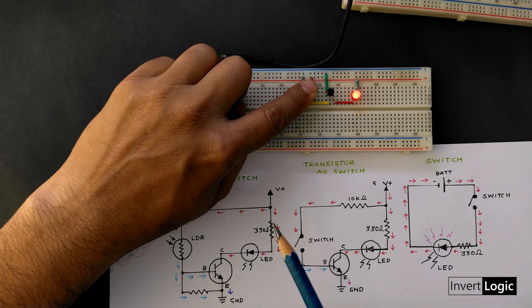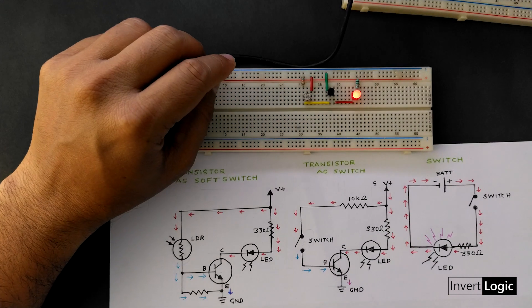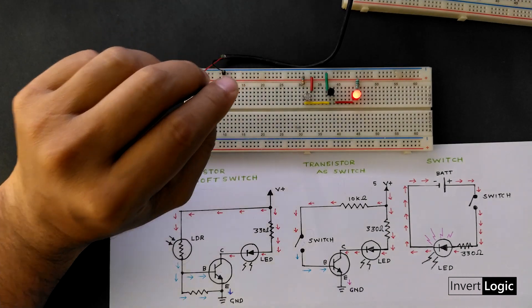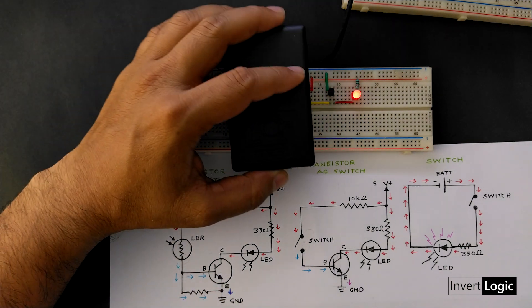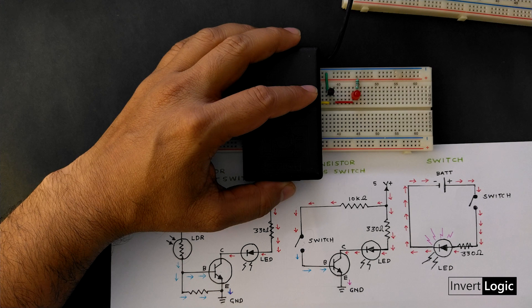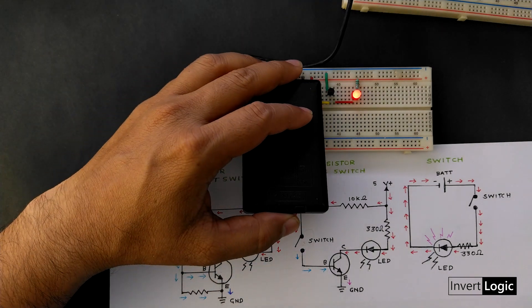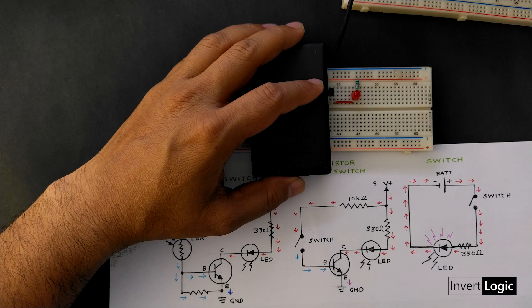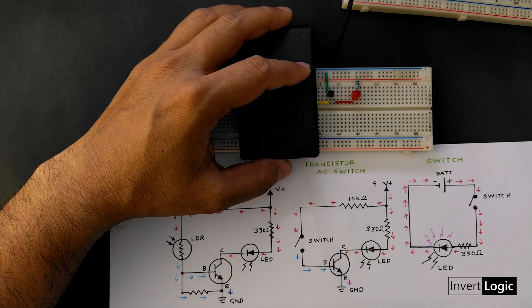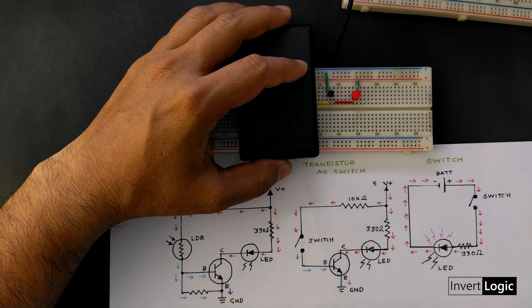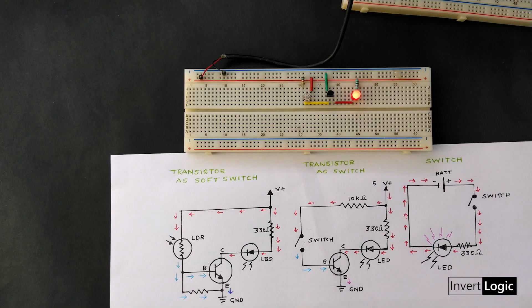But what happens if I try to cover the LDR with my finger? Well as you can see the LED turns off because the LDR resistance becomes very high as I cover the LDR sensor with my finger. And that stops the current flow to the base of the transistor and the transistor turns off and the LED also turns off.